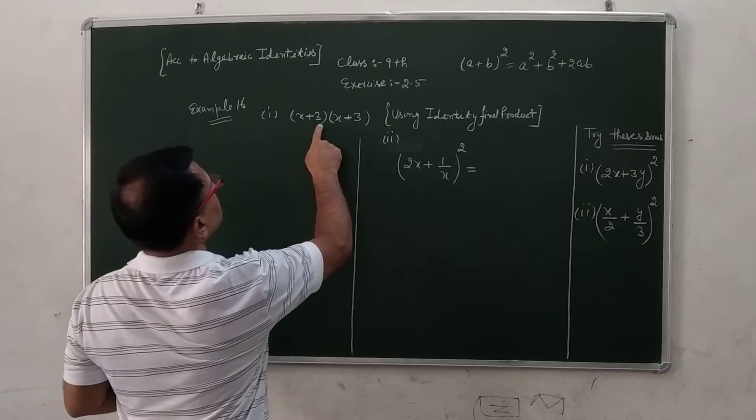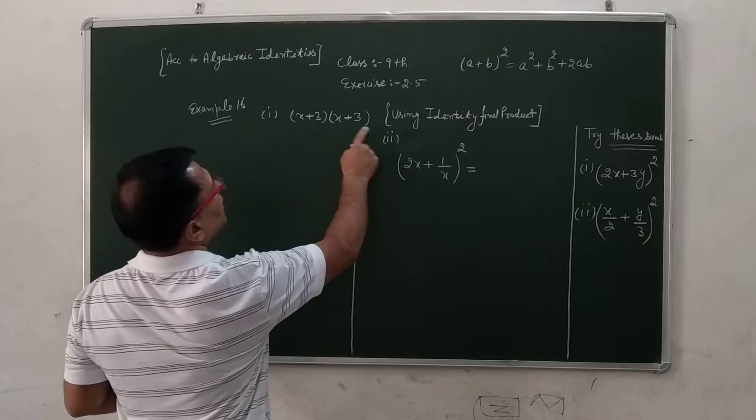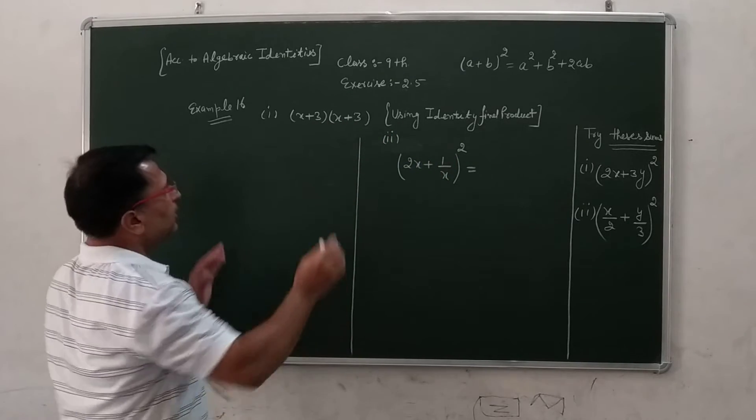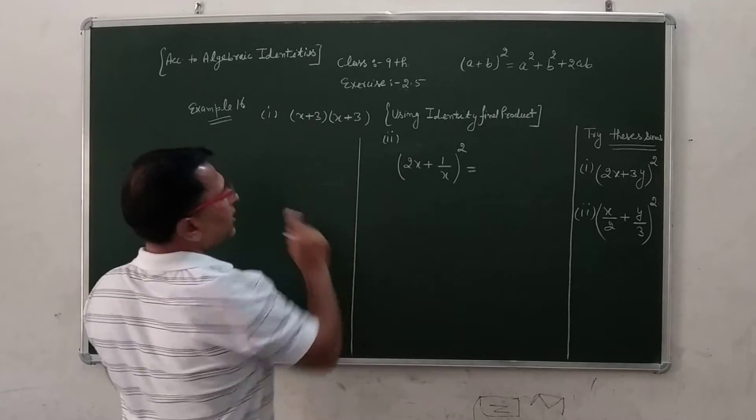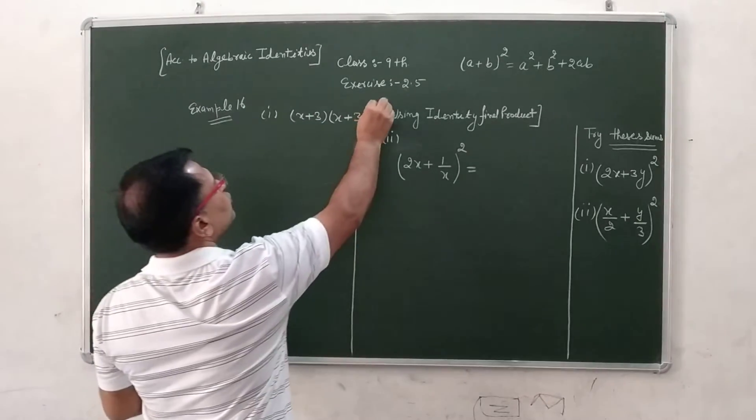It is x plus 3 into x plus 3. Find the using identity, find product. You will use the identity.